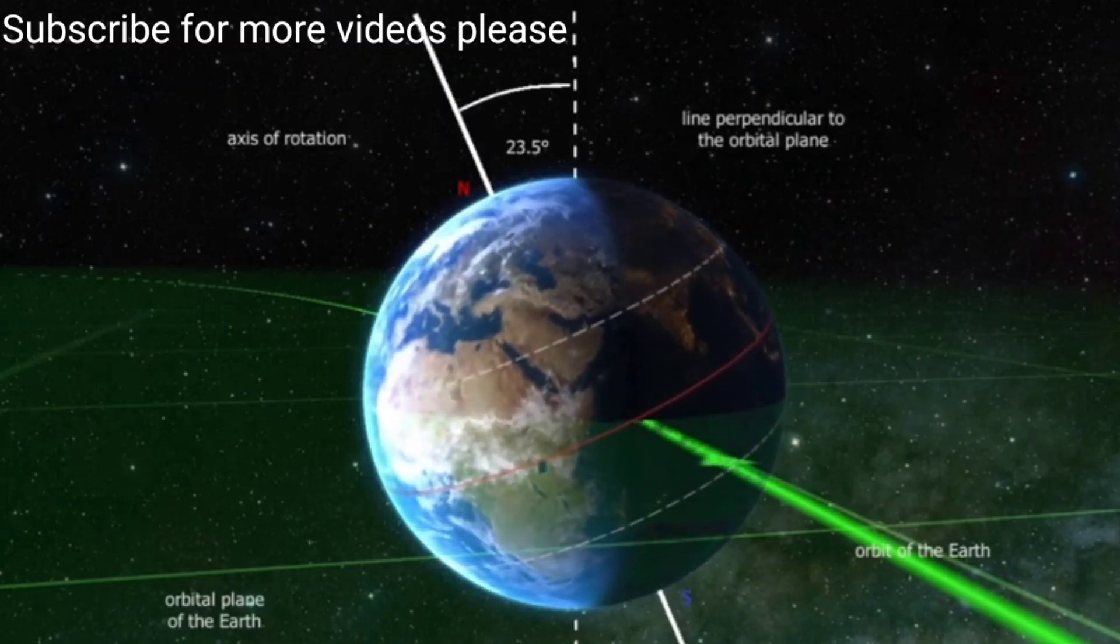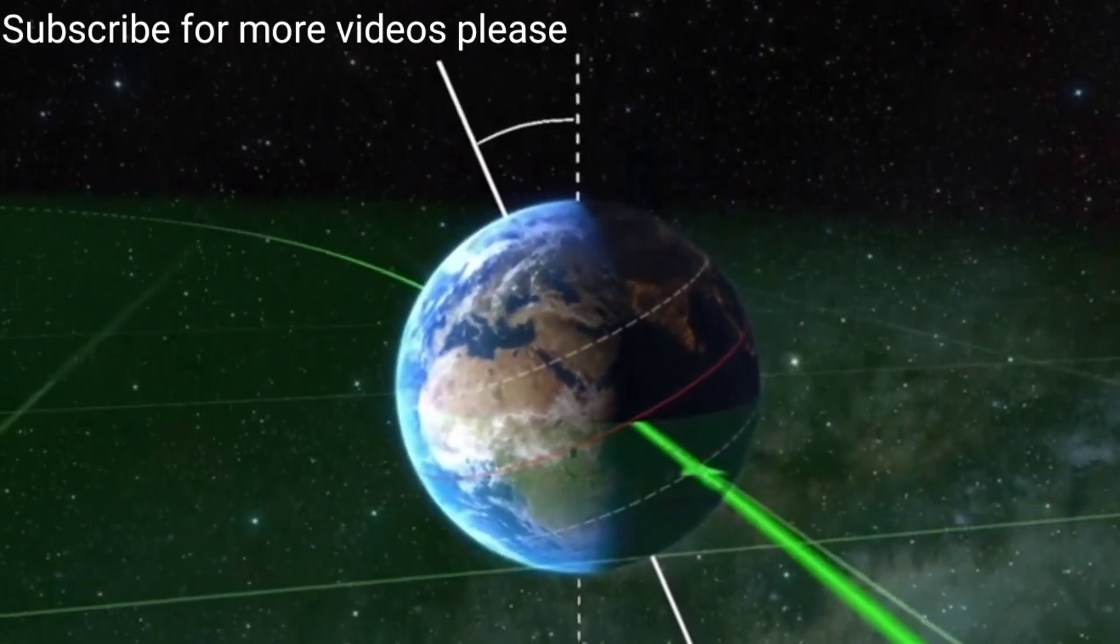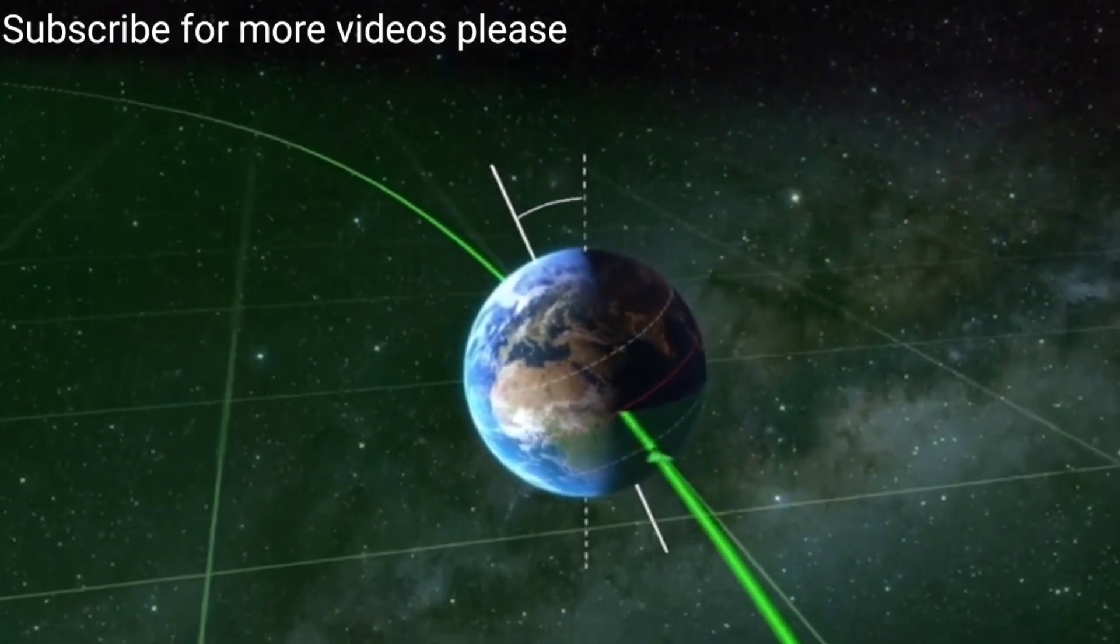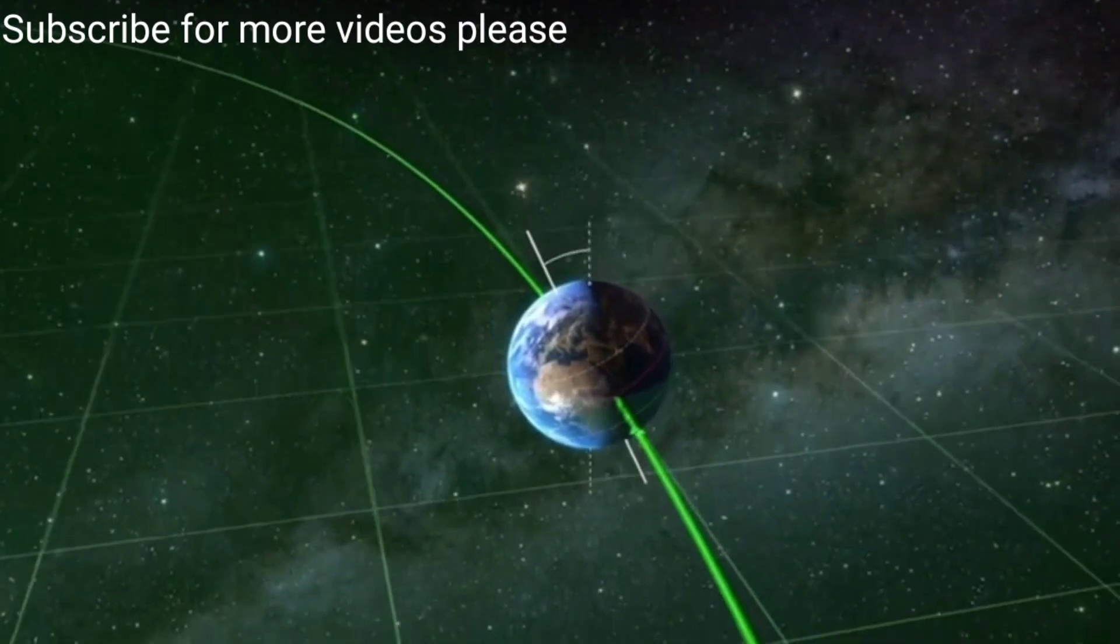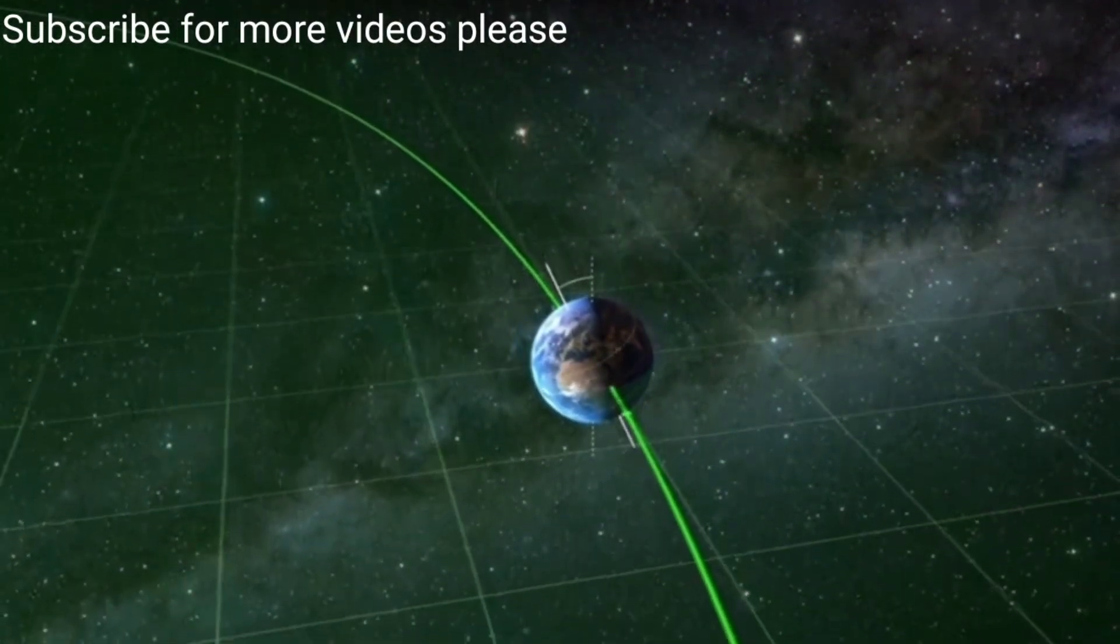Our planet rotates, relative to the Sun, once every 24 hours. Due to the centrifugal force caused by the rotation, the planet is somewhat flattened.